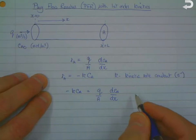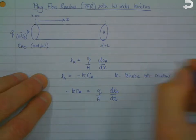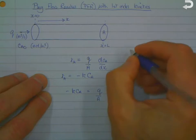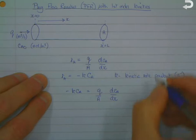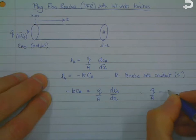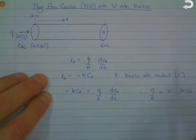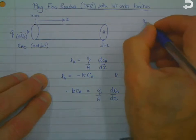Now to integrate this we do a couple of things. First of all, I want to replace Q over A by the velocity U. So the volumetric flow rate divided by the cross-sectional area is going to be U, that's the velocity in meters per second. And we need to just make one further assumption.